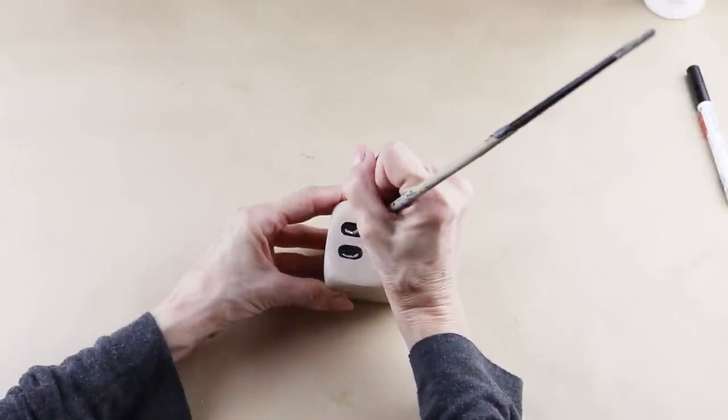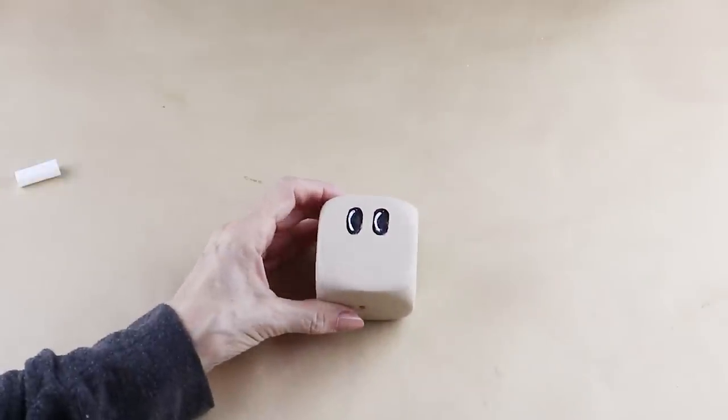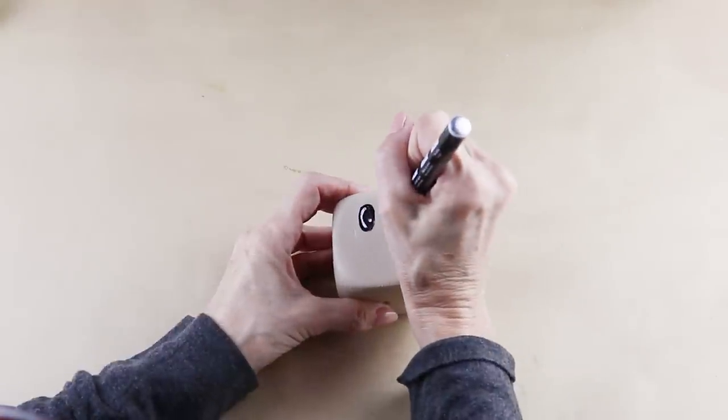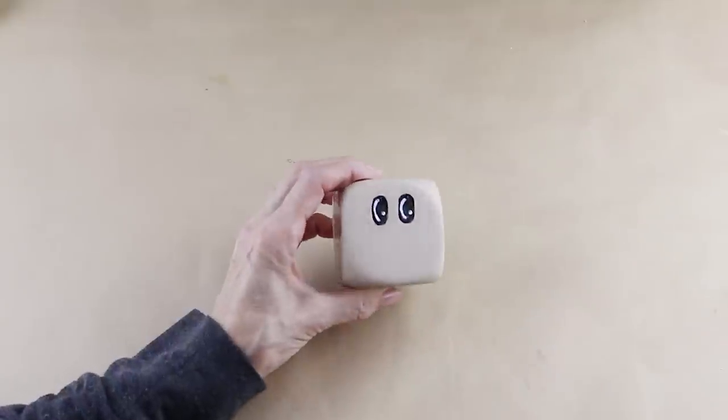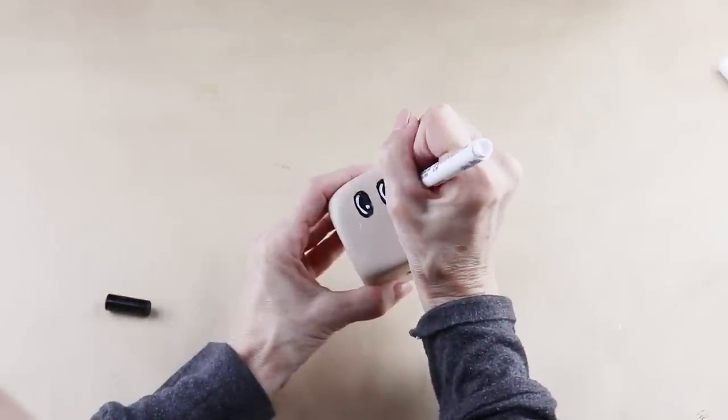I darkened them up a bit, and then using my paint pen, I added on two dots, and you can always use the back of your paintbrush. I then added two eyelashes to the eyes.